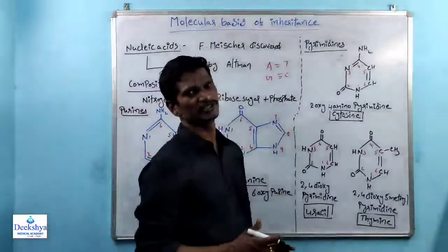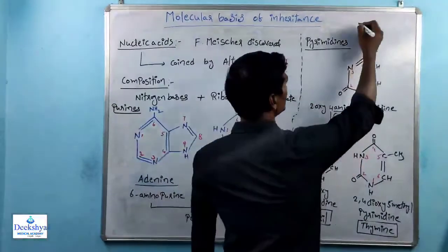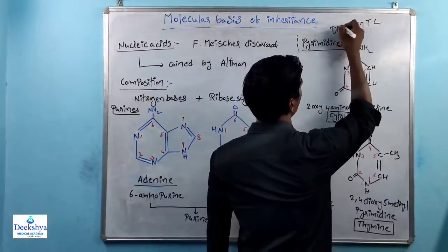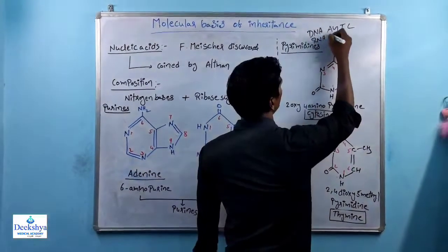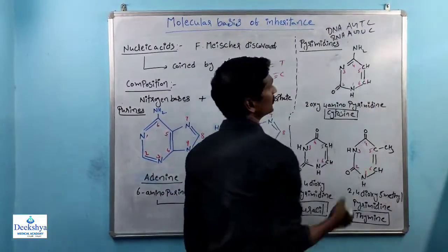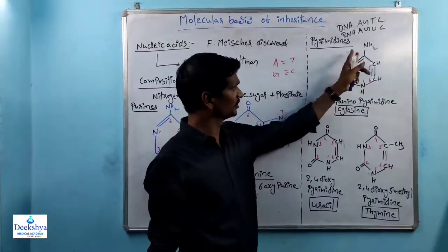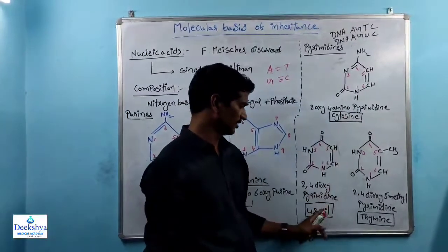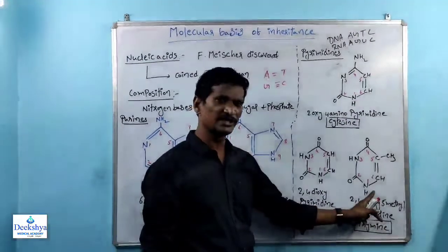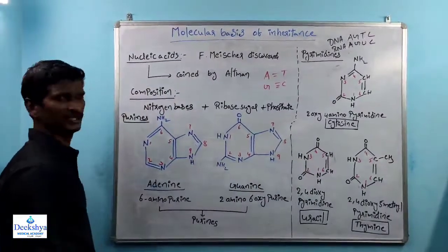These are the nitrogen bases seen in nucleic acids. In DNA, the bases present are Adenine, Guanine, Thymine, and Cytosine. In RNA, Thymine is replaced by Uracil — so RNA has Adenine, Guanine, Cytosine, and Uracil. Thymine is seen in DNA; Uracil is seen in RNA.